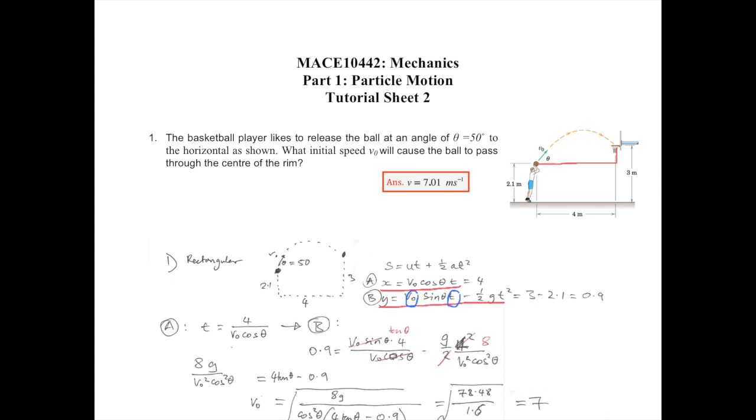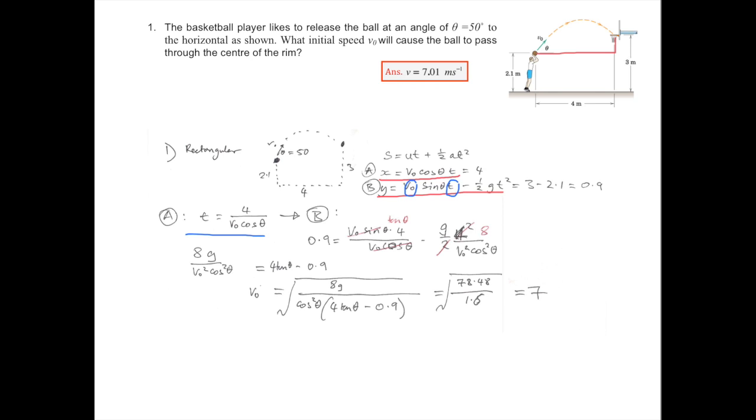And that's two simultaneous equations, so you take the first one, you make t the subject and you substitute it into b. And this gives you the form here.